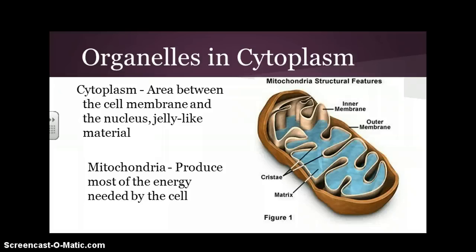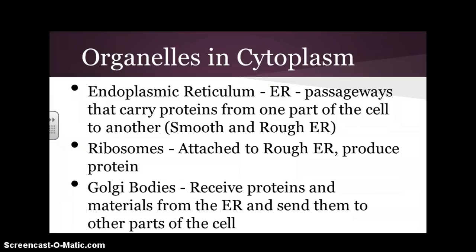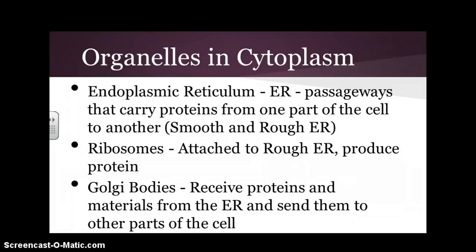Some organelles are found in the cytoplasm, which is the area between the cell membrane and the nucleus — it's a jelly-like material. The mitochondria produce most of the energy needed by the cell, also called the powerhouse. The endoplasmic reticulum, or ER, consists of passageways that carry proteins from one part of the cell to another — we can have smooth ER or rough ER. Ribosomes are attached to rough ER and produce protein. Golgi bodies receive proteins and materials from the ER and send them to other parts of the cell.